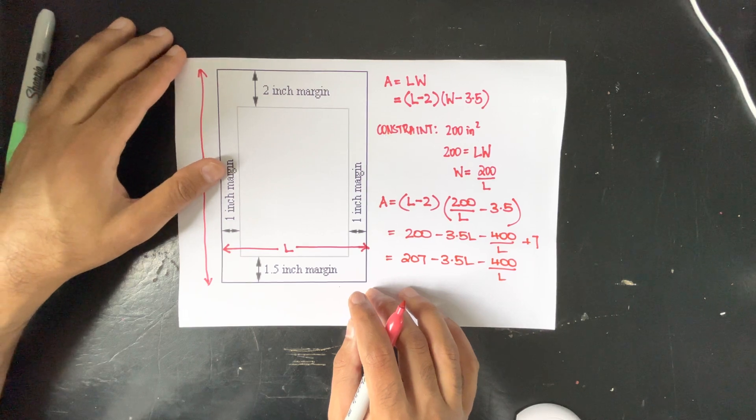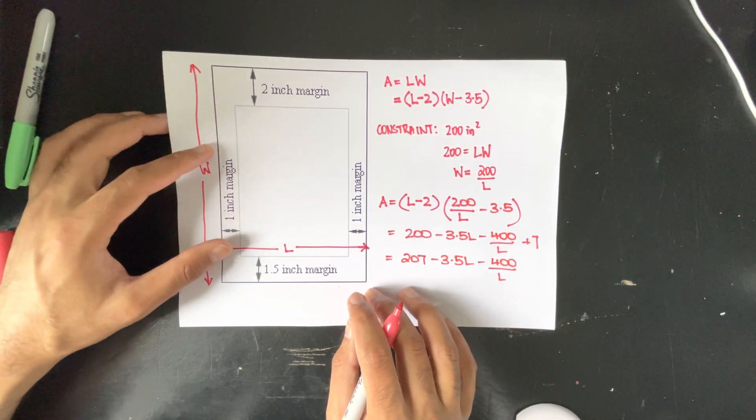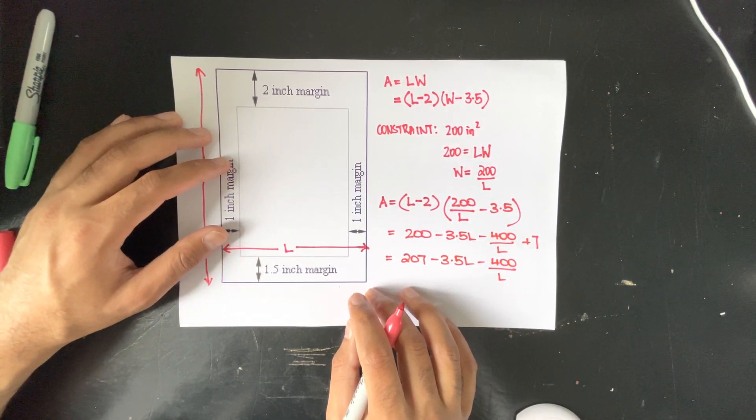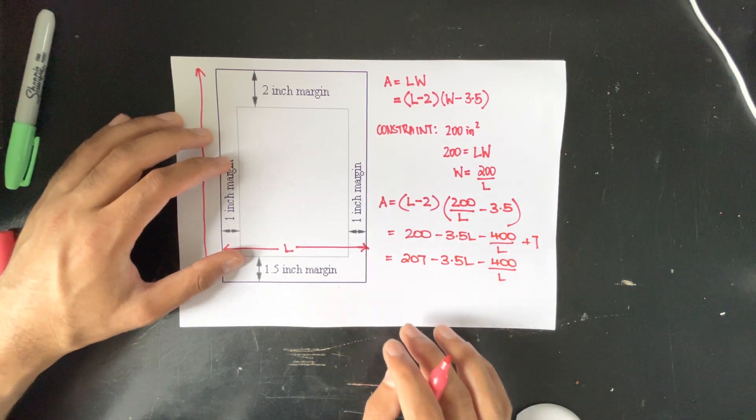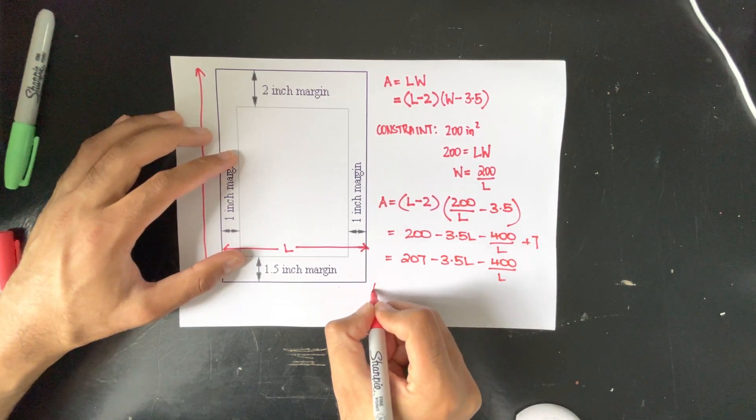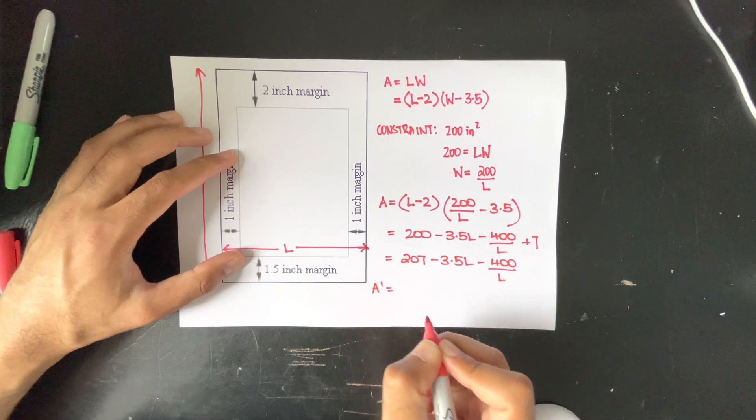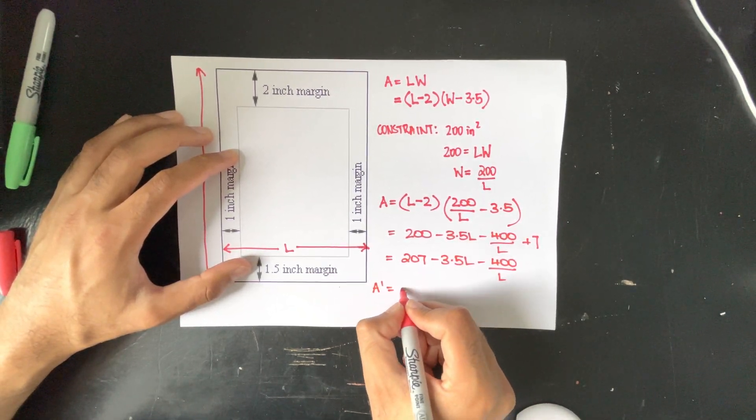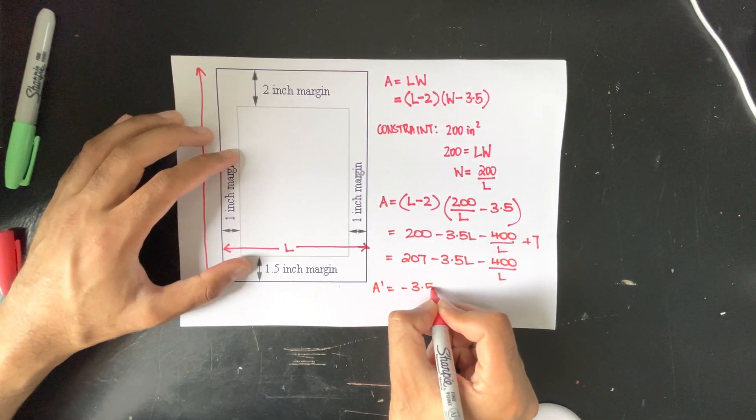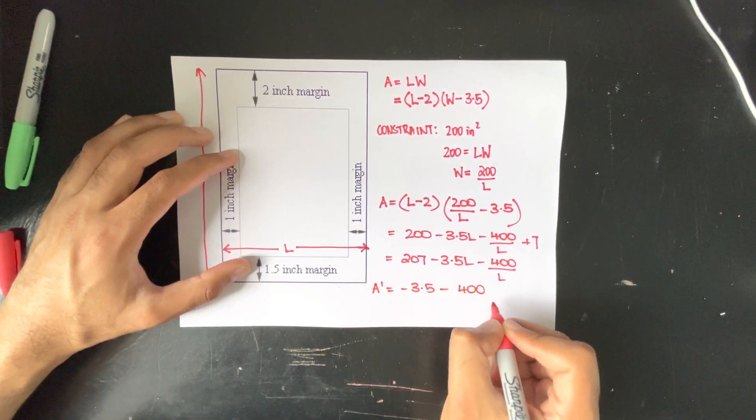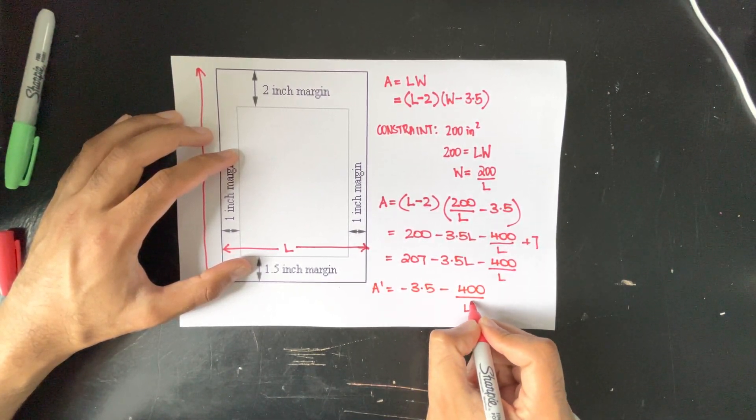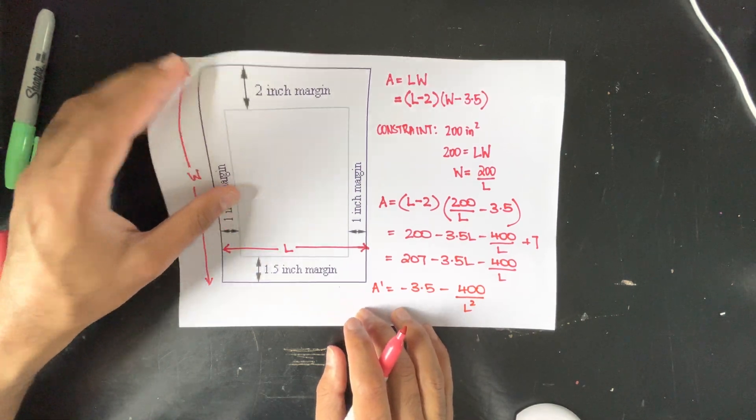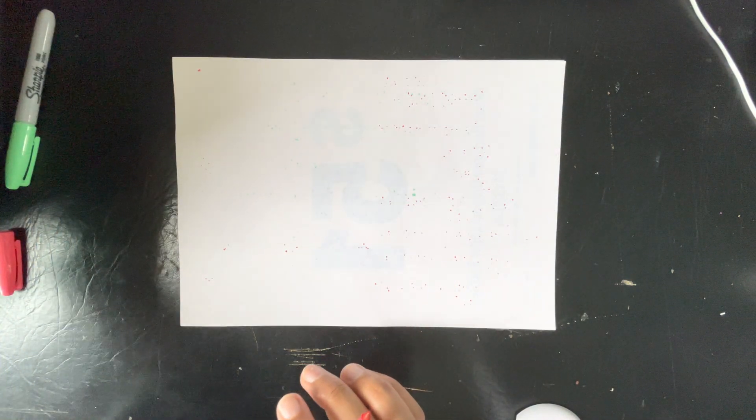And in doing so we will get A dash being equal to negative 3.5 minus 400 over L squared and we're going to set that equal to 0.